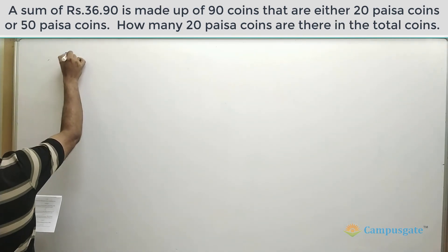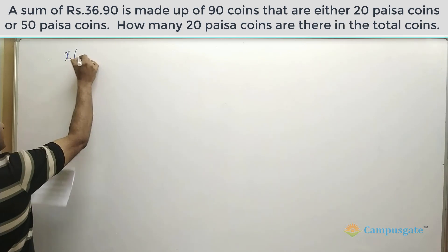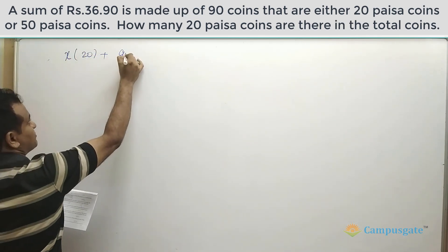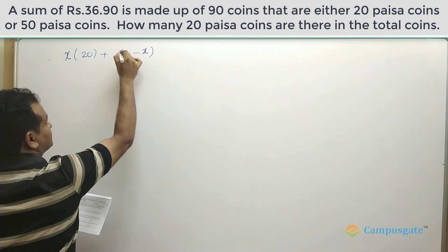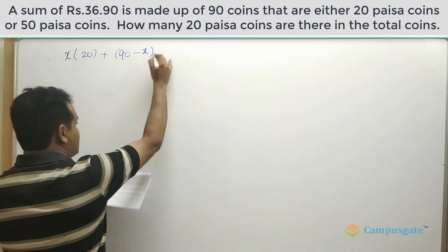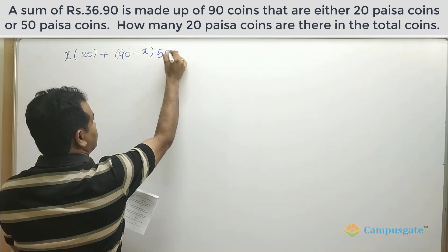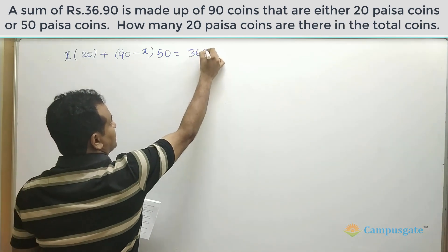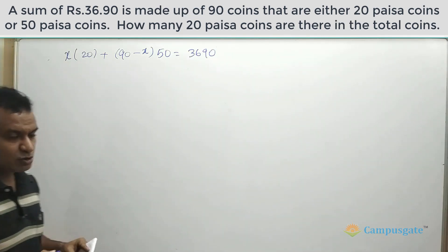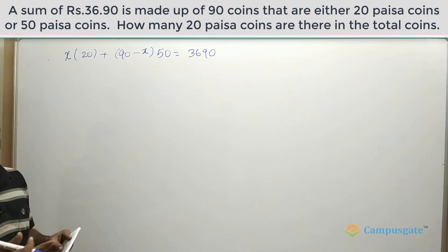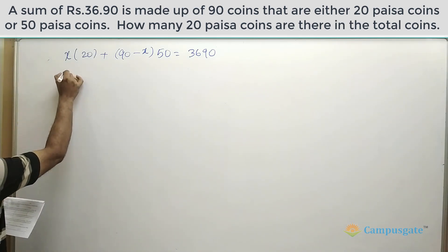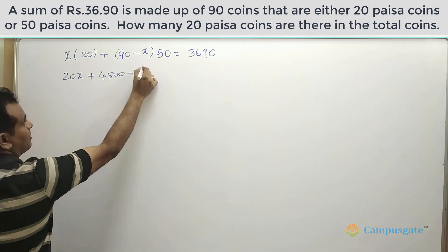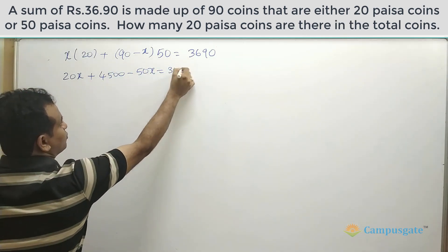Let us say there are x 20 paisa coins, and their value will be x into 20. The remaining coins must be 90 minus x, and their value at 50 paisa, plus 20x, should equal 3690 paisa. We need to convert everything into paisa since both 20 and 50 are in paisa.